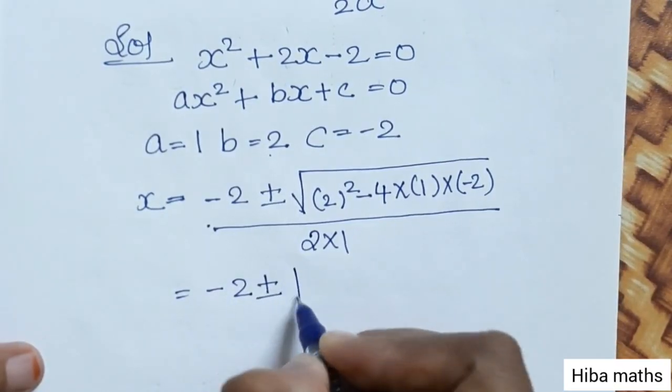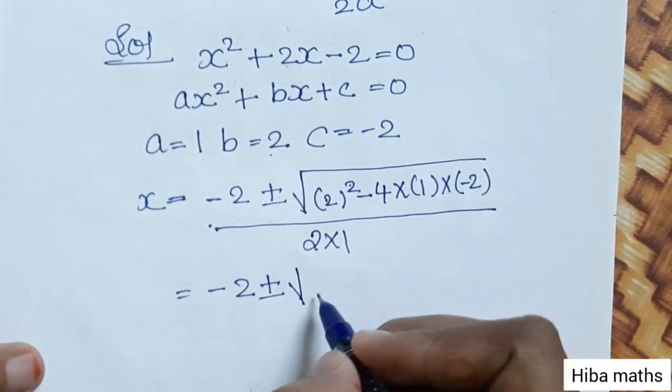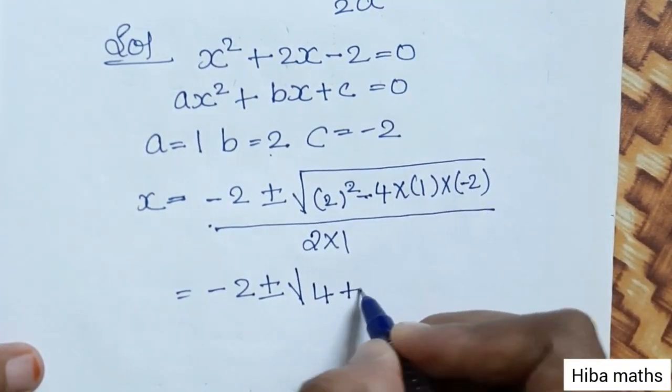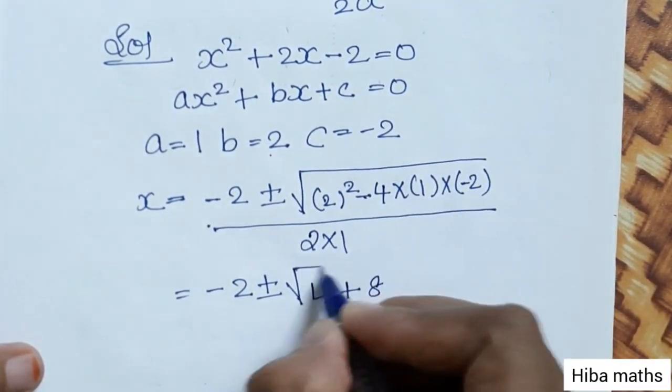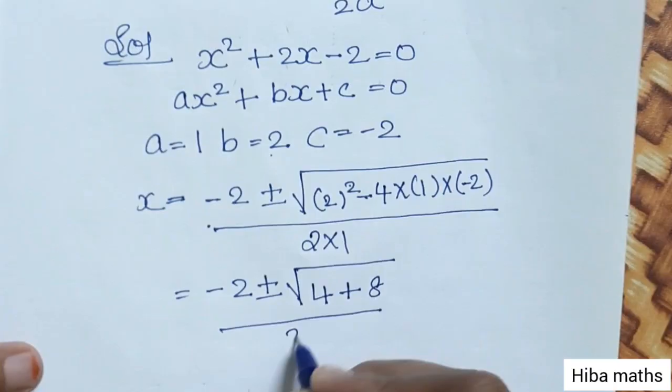Minus 2 plus or minus root of 2 square is 4, minus into minus is plus, 4 times 2 is 8, divided by 2.